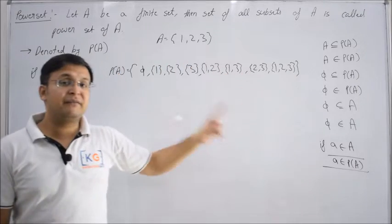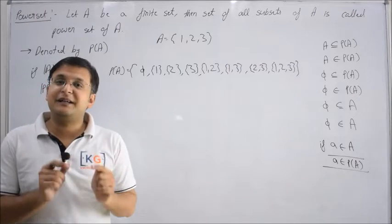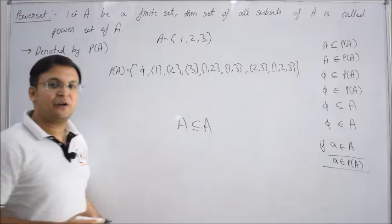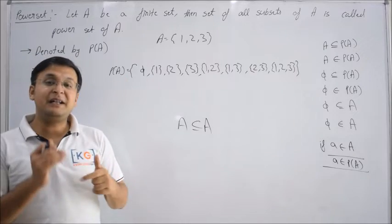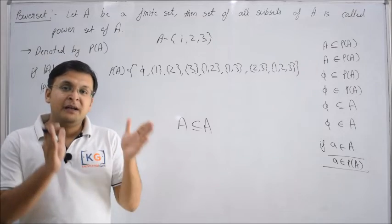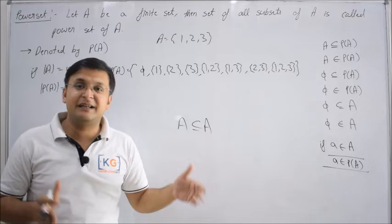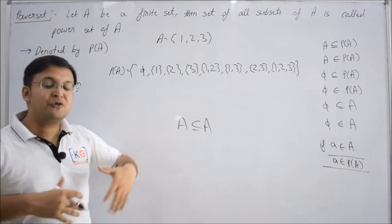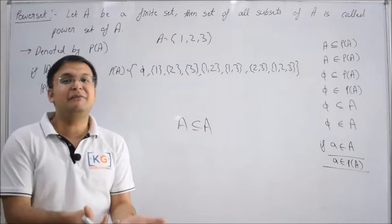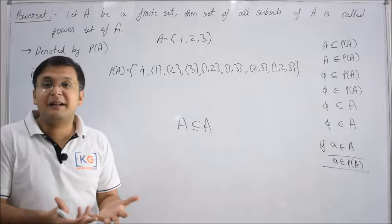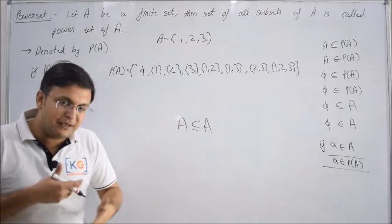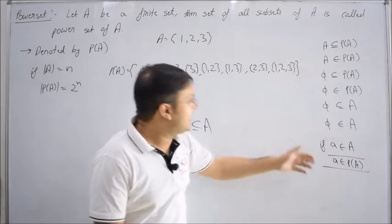Then {1,3} and {2,3}. And then the set itself — because every set is a subset of itself. So when we discussed subsets, A is a subset of A is true. Since power set is the set of all possible subsets, the set A itself will also be included. So the power set of A contains: Φ, {1}, {2}, {3}, {1,2}, {1,3}, {2,3}, and {1,2,3}.